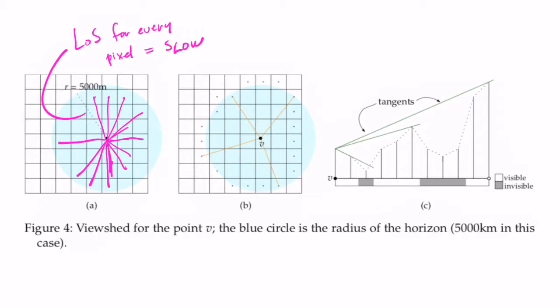An alternative solution is called the tangent method. Instead of visiting every pixel, you sample pixels on the boundary of the radius and perform a modified version of the line-of-sight algorithm between V and each of those boundary points. The key difference is that the algorithm shouldn't stop as soon as it finds a non-visible part — it's possible to have pixels that are not visible, then visible, then not visible again. For example, you might not see behind a house, but you could still see a mountain two or three kilometers away.